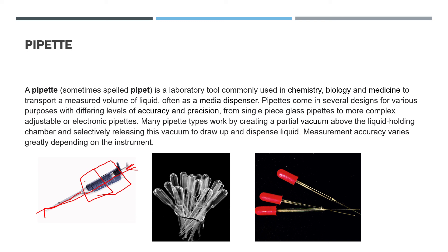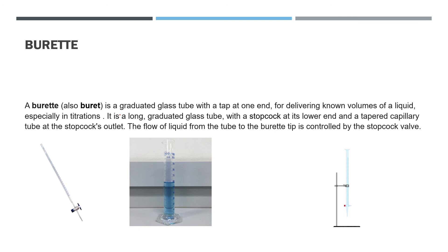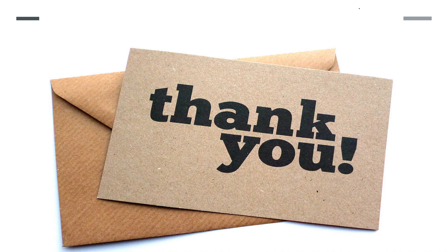A burette has a part called a stopcock. The stopcock controls whether liquid can pass through or not. If you open it, liquid flows through; if you close it, liquid is locked in. That's the difference. Thank you, see you in the next video — don't forget to like and subscribe!